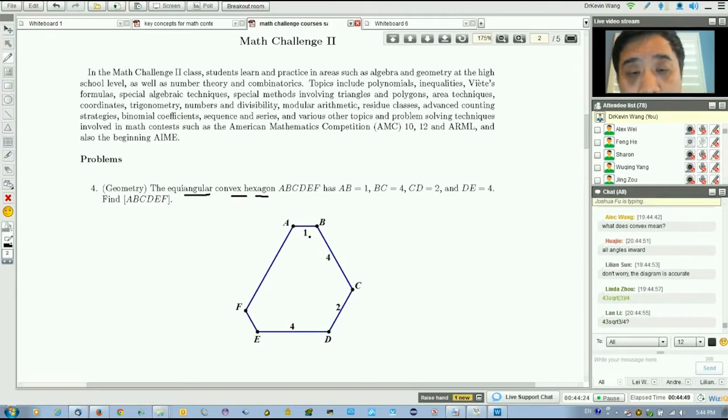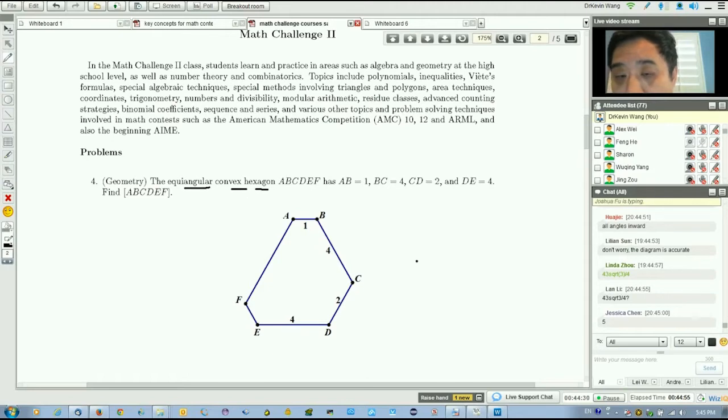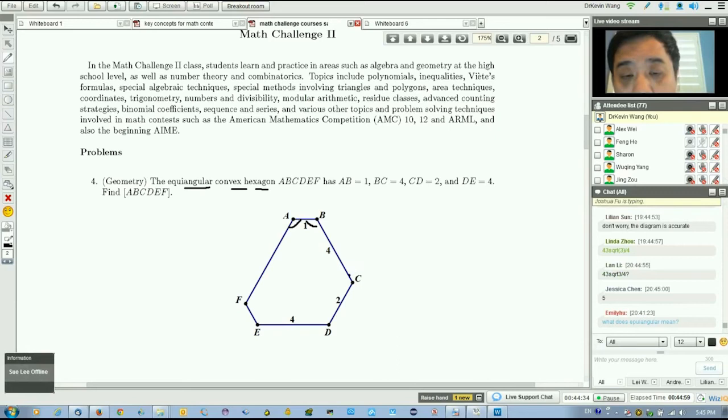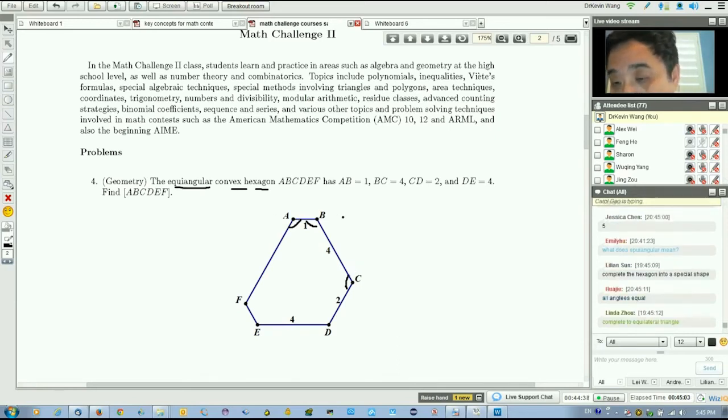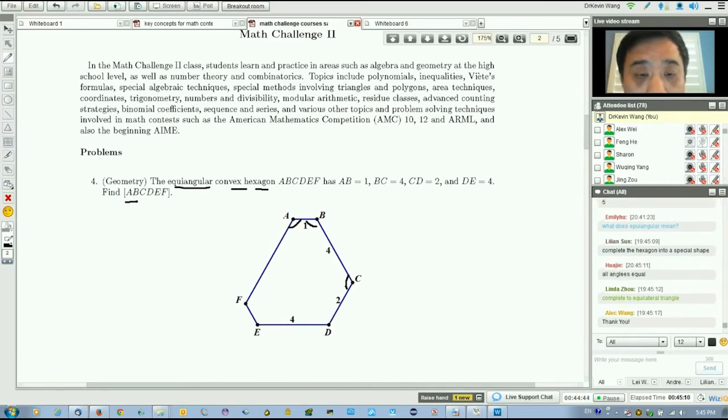We have a convex hexagon that is equiangular with given side lengths. The angles are all 120 degrees.